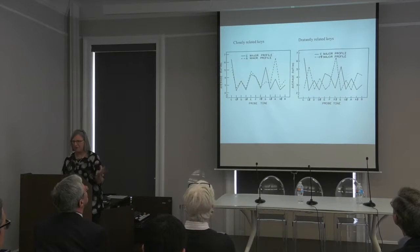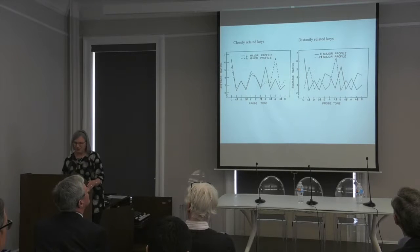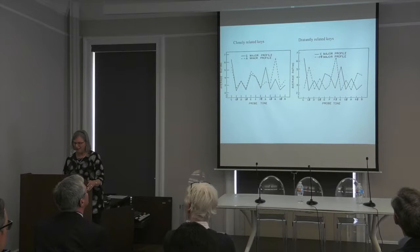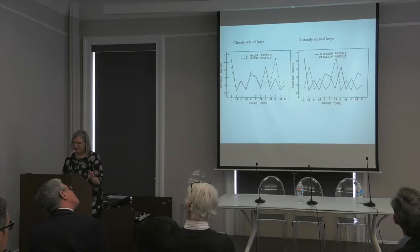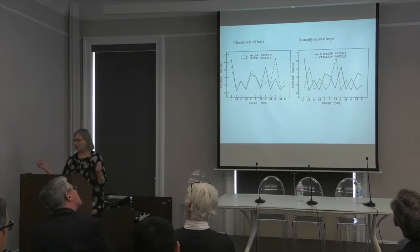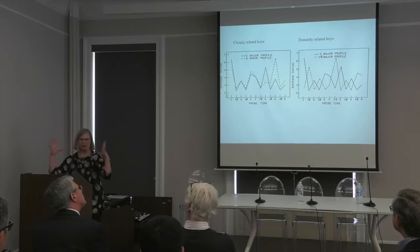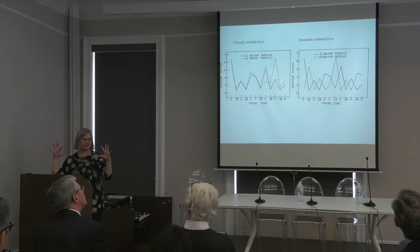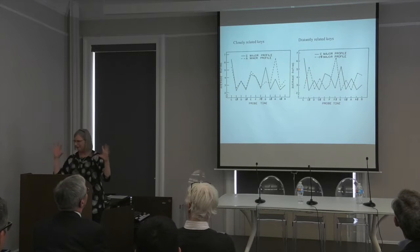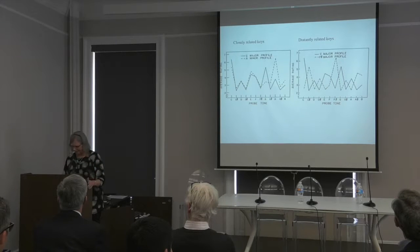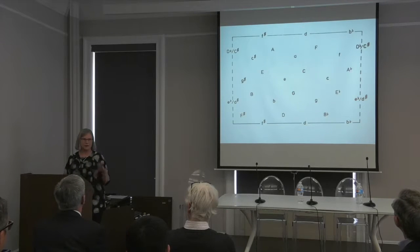On the left here, you have the probe tone ratings for two closely related keys: C major and A minor. On the right, you have the two curves of probe tone ratings for C major and F-sharp major, which are diametrically opposite on the circle of fifths. We generated a matrix of all the correlations between all the key tonal profiles and put it into a multidimensional scaling program, and recovered a torus.